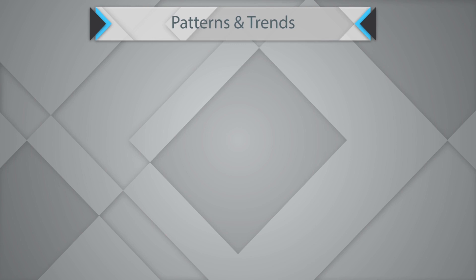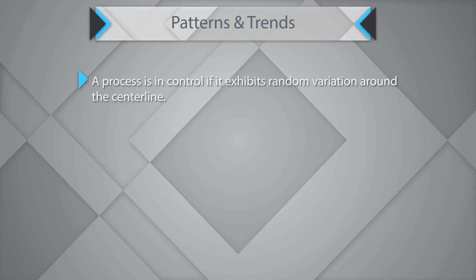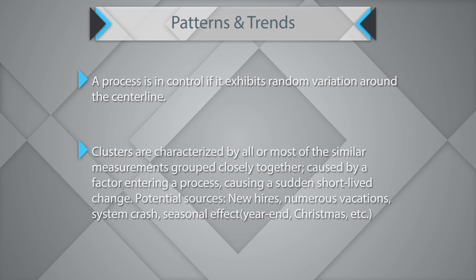There are several patterns and trends one can study when using control charts. A process is in a state of statistical control if it exhibits random variation or common cause variation around the center line. Clusters are patterns characterized by all or most similar measurements grouped closely together, caused by a factor entering a process causing a sudden, short-lived change. Potential sources could be new hires, vacations, system crashes, or seasonal effects.